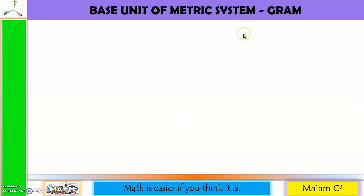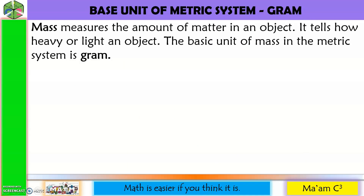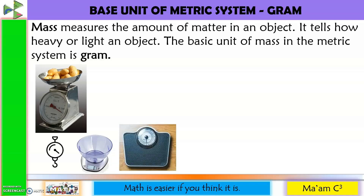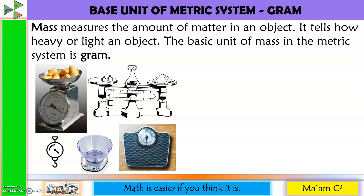Another base unit of the metric system is gram. It is the basic unit for mass. Mass measures the amount of matter in an object — it tells how heavy or light an object is. Here are some instruments used to measure mass: a market weighing scale, a hanging weighing scale commonly used in wet markets for weighing meat, a small precision weighing scale for small quantities, a bathroom scale for measuring body weight, and a platform balance used as a laboratory apparatus to compare weights.